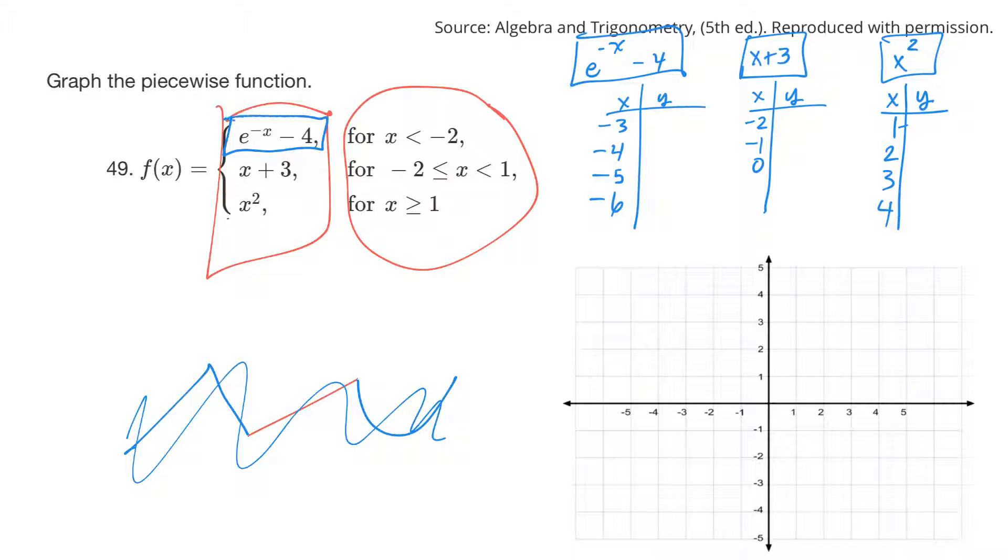So you just have to look at the domain and figure out what's happening in that particular domain. So for the first part, let's look at this one. And they say if x is less than negative 2, so anything this way from negative 2, the graph looks like this.